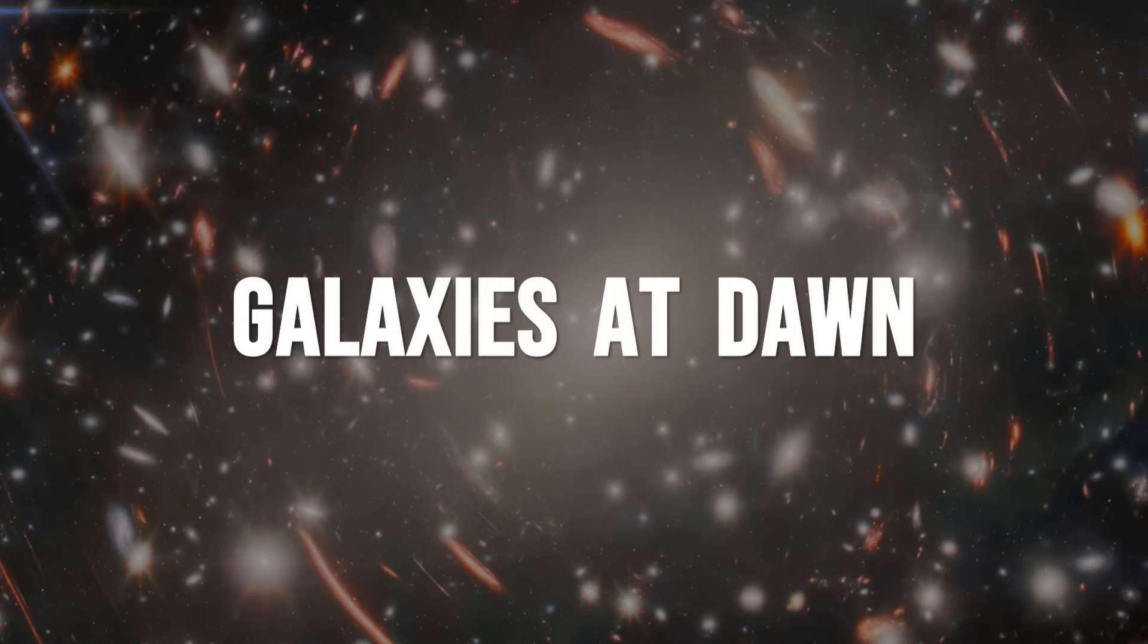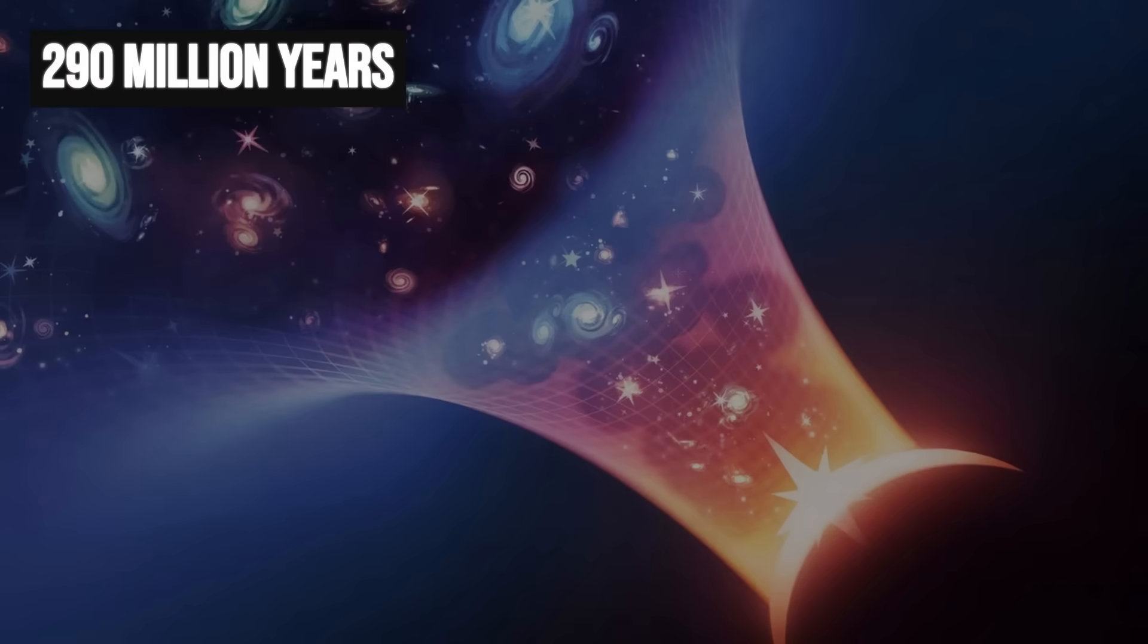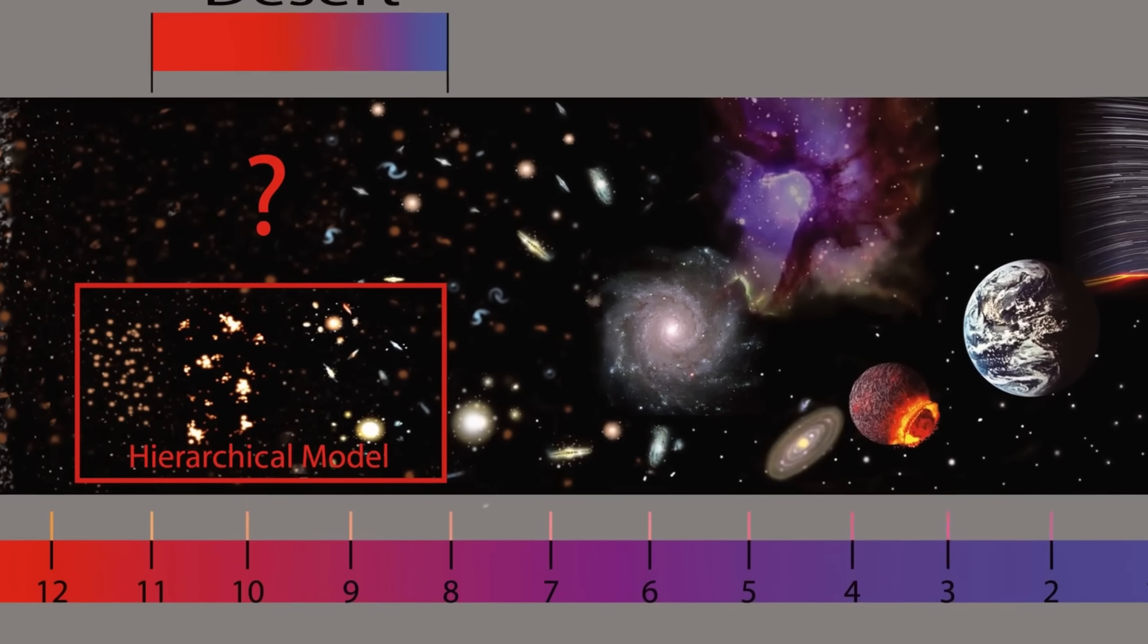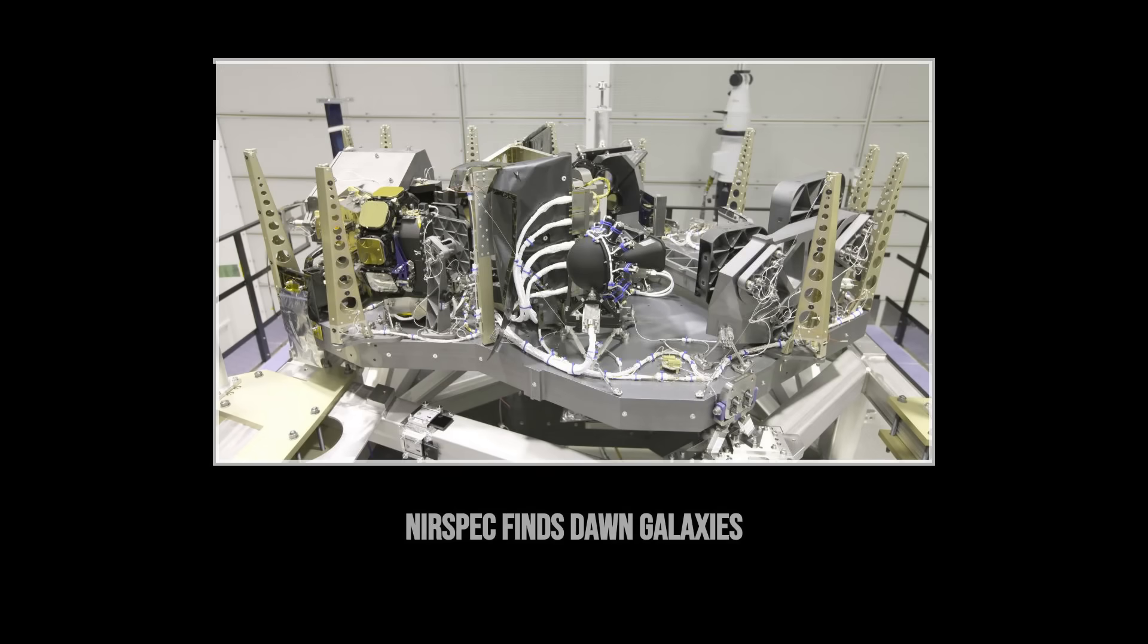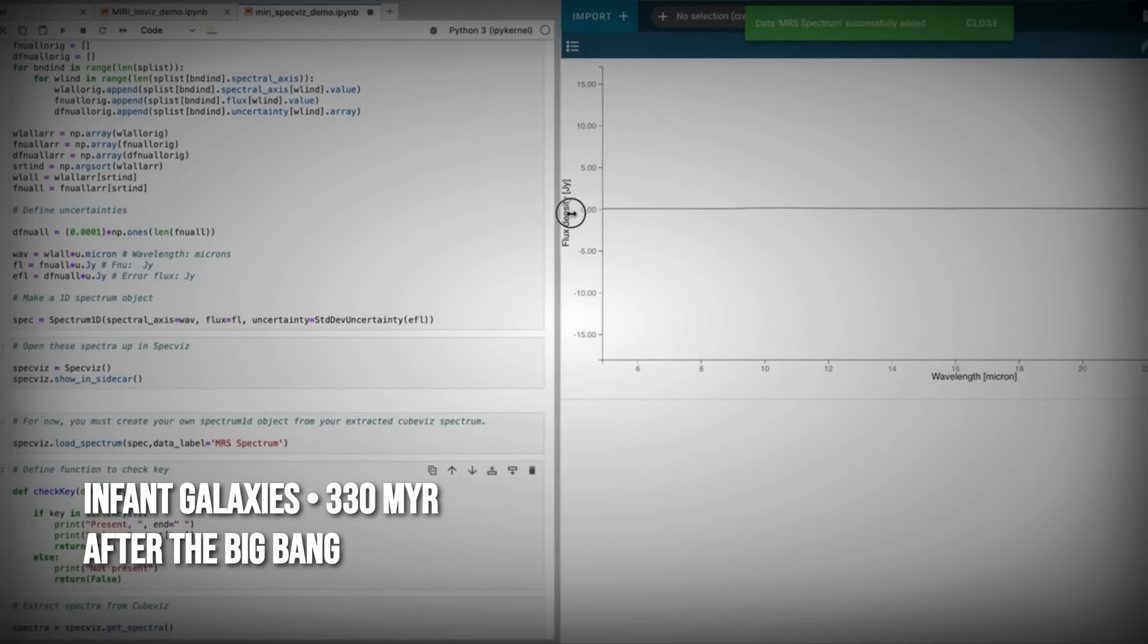At the edge of what Webb can see, the record for the farthest confirmed galaxy now belongs to JADES-GS-z14-0. Its light began its journey just 290 million years after the Big Bang. Not far behind, MOISEM-z14 sets a new benchmark at 280 million years. Both galaxies have been spectroscopically confirmed, their distances locked in by sharp Lyman breaks in Webb's NIRSpec data.